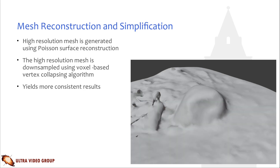In this stage, a triangle 3D mesh is generated from the point cloud using Poisson surface reconstruction. It is usually beneficial to generate as high a resolution mesh as possible in order to capture fine details. This extremely high resolution mesh is then downsampled using a voxel-based vertex collapsing algorithm. This yields a very uniform topology and makes the UV unwrapping stage considerably easier and computationally more lightweight. The image shows the final downsampled mesh.